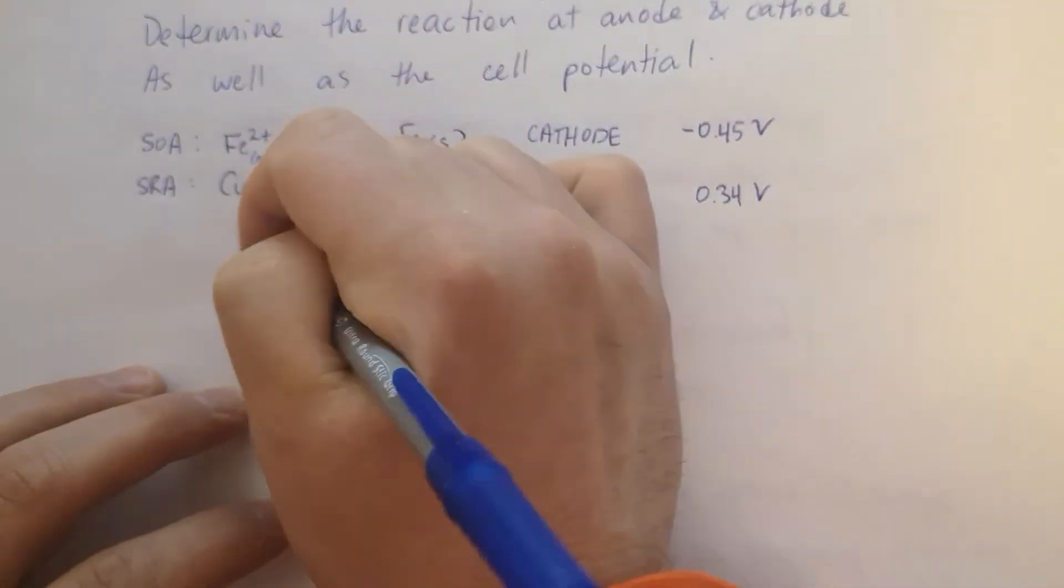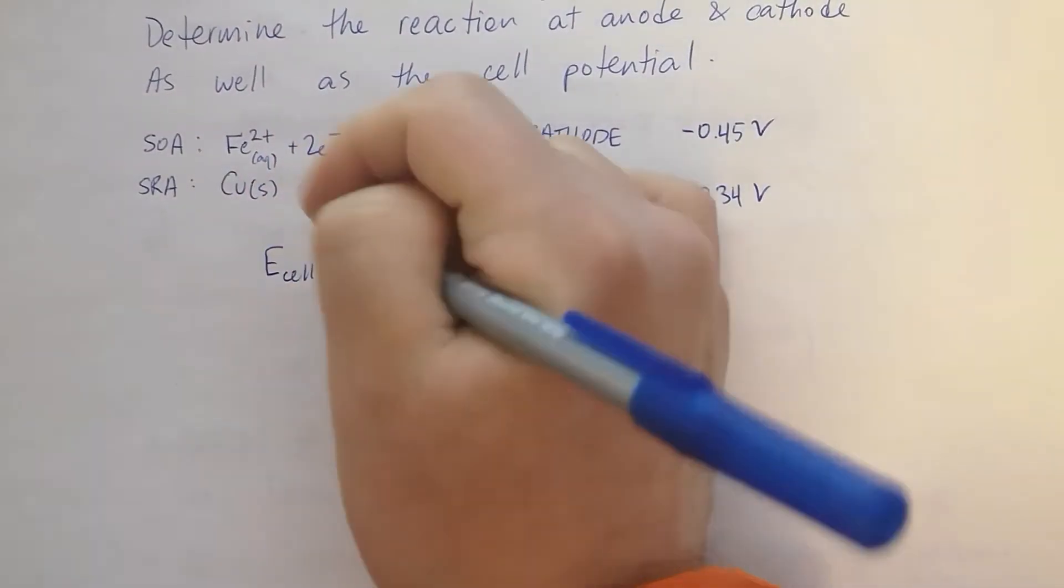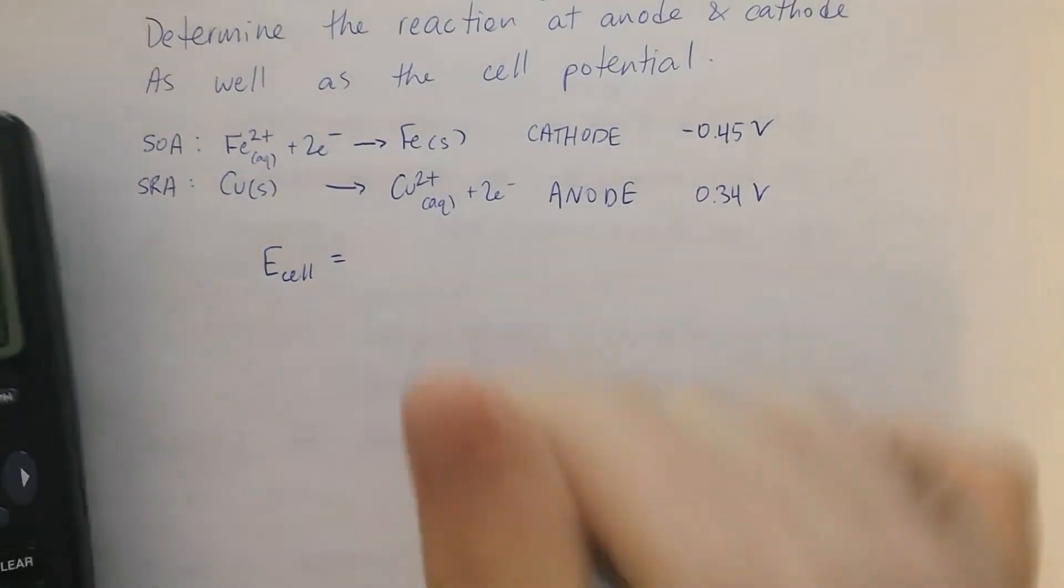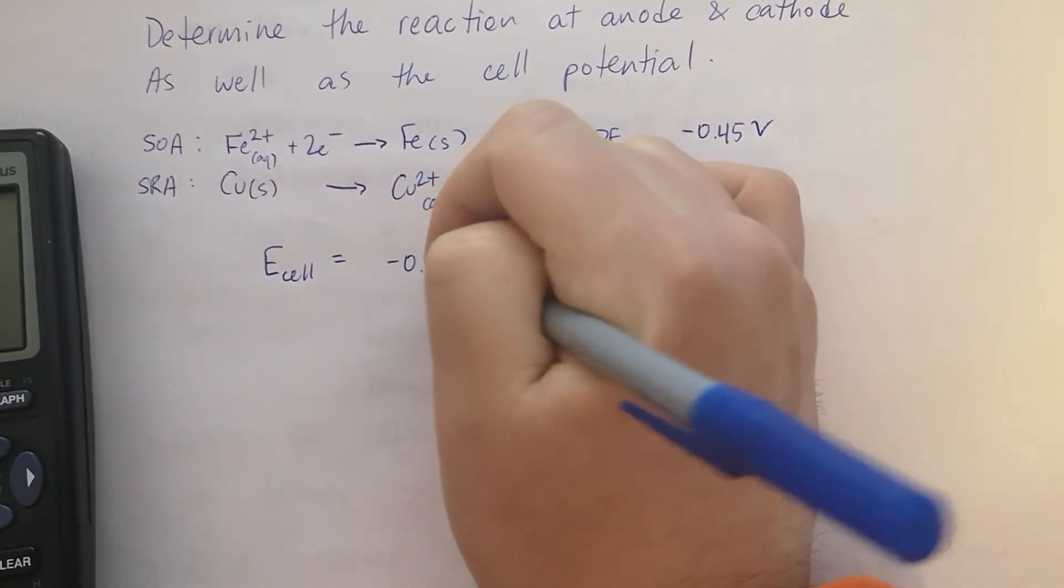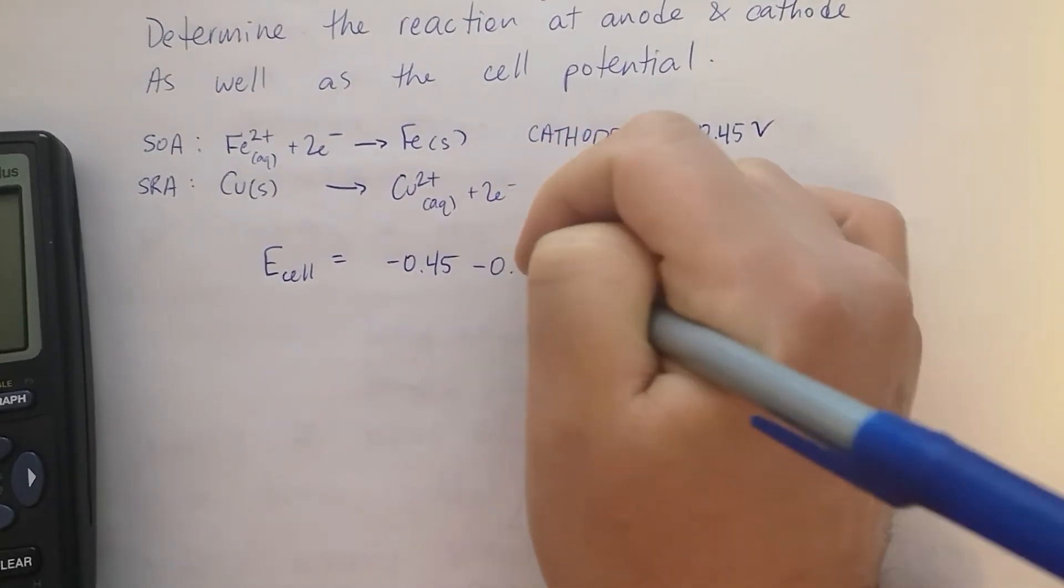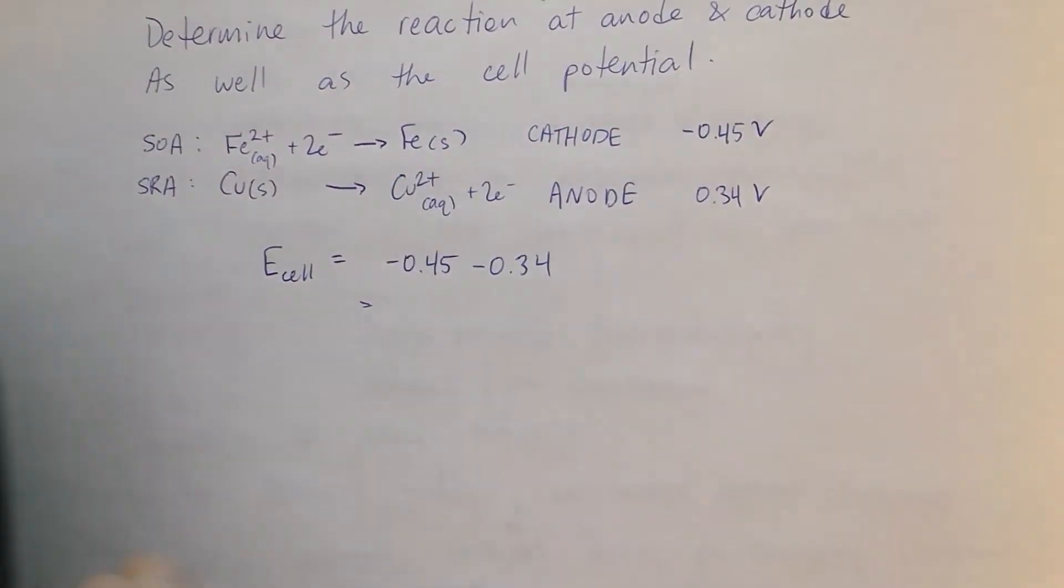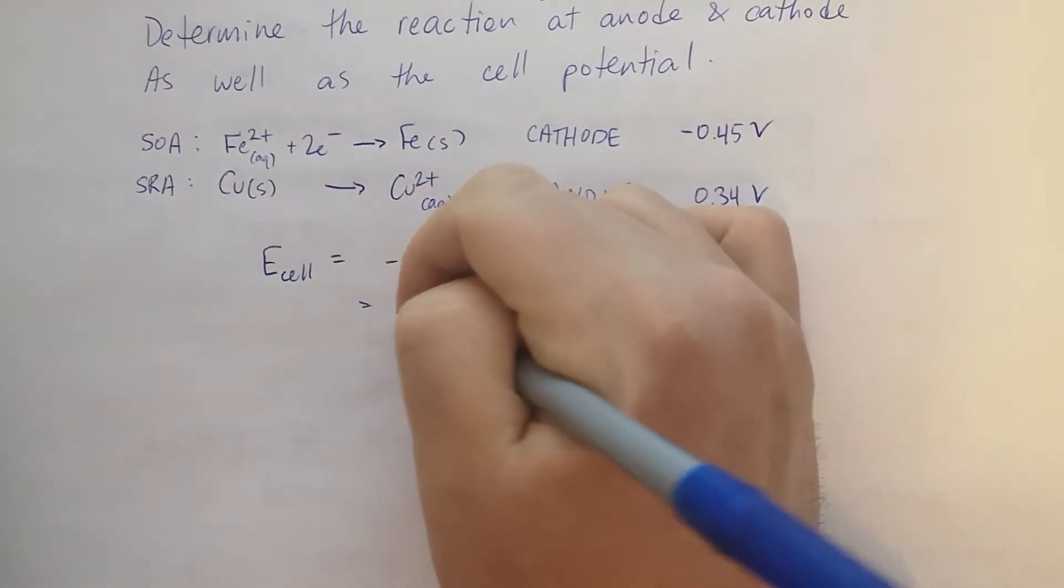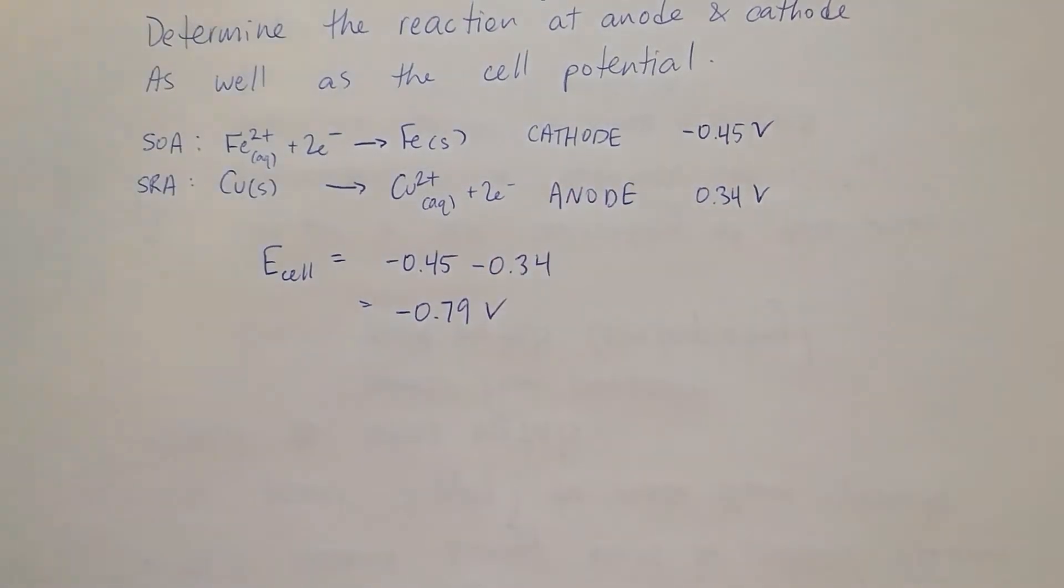To find cell potential, it's cathode minus anode. Remember, we are expecting a negative value here because this will be an electrolytic cell.